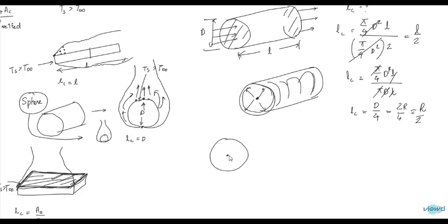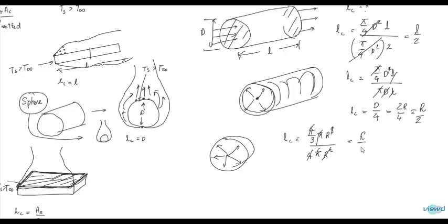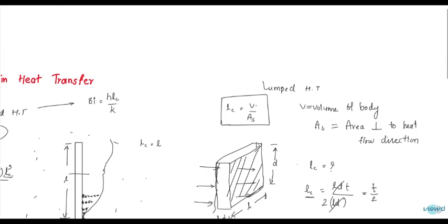In the case of a sphere, Lc is equal to the volume divided by the surface area of the sphere — that is (4/3)·π·R³ divided by the sphere's surface area. These are the characteristic lengths we find in heat transfer: in forced convection, free convection, and lumped heat transfer.